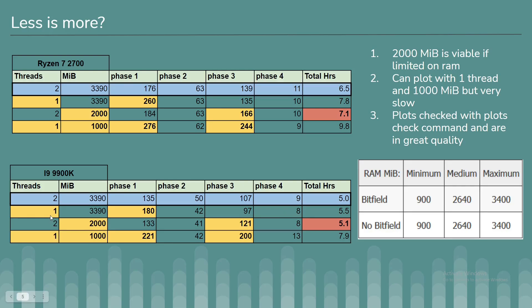Looking at the 9900k, using one thread only extends the plot time by about 30 minutes, so you could double up your plots just by using one thread instead of two. I also lowered the thread to one and the RAM to 1000 MB — it still works, it just takes a lot longer. I checked the plots with the plots check command, and they all came out pretty good quality. Out of 30 proofs, the lowest I got was 0.76, so quality doesn't really change — they're just very slow plots.